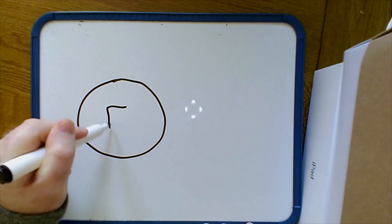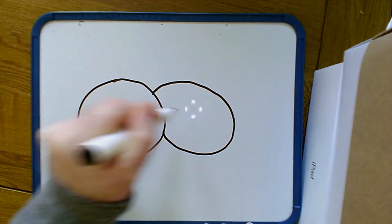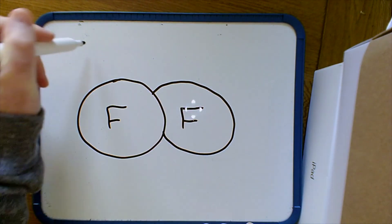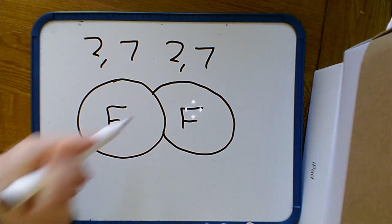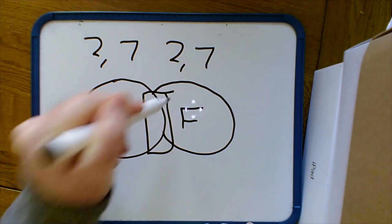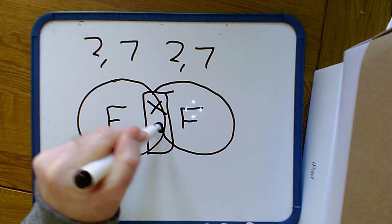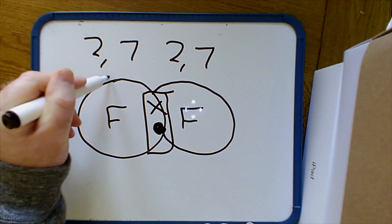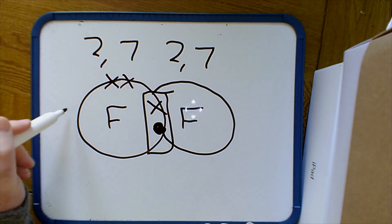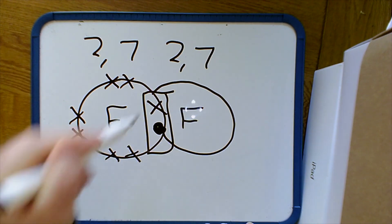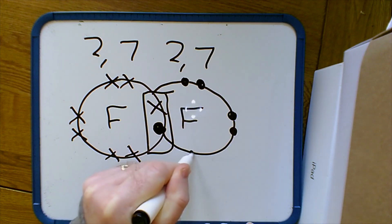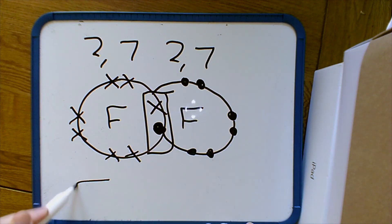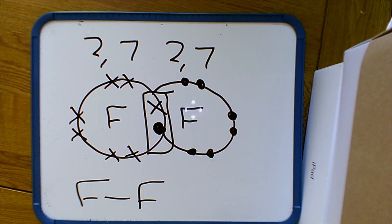First I'm going to draw a fluorine molecule and write down the electron arrangement, which is 2,7 for each atom. With covalent bonding diagrams we only need to show the outer electrons. I'm going to draw a box representing the shared electrons and put two electrons in the box, because each atom needs one electron to gain a full outer shell. I then put the other six electrons around each fluorine. Each fluorine now has a share of eight electrons, giving a single covalent bond — a shared pair of electrons.